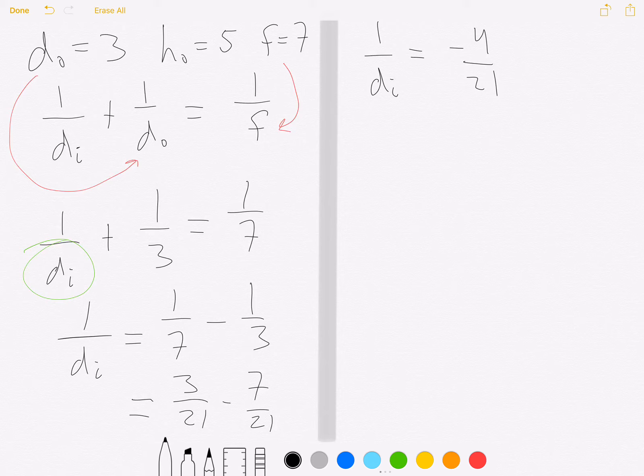But we don't want the reciprocal of di, we want the image distance itself, so we need to flip both sides. So di equals negative 21 over 4. Remember when you flip a fraction, it doesn't change the sign, so the negative sign will just hang out there.